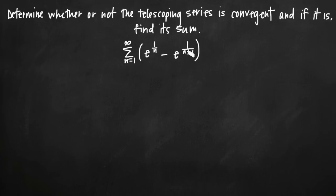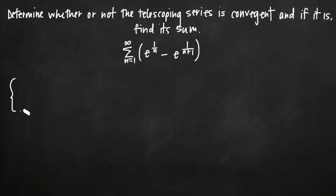The best way to tell whether or not you actually have a telescoping series on your hands is to plug in the first several terms of the series, starting with whatever we've been given here, which in our case is n equals 1.